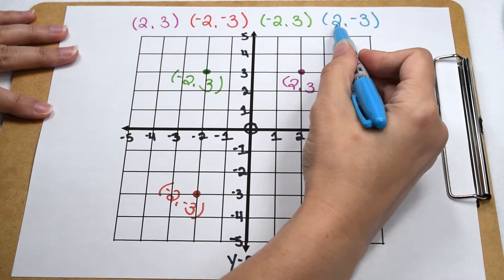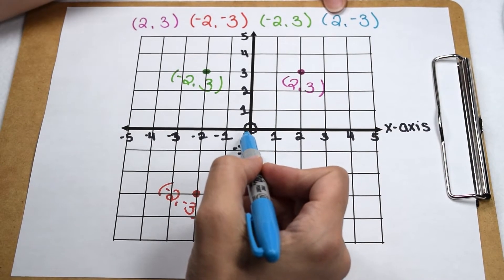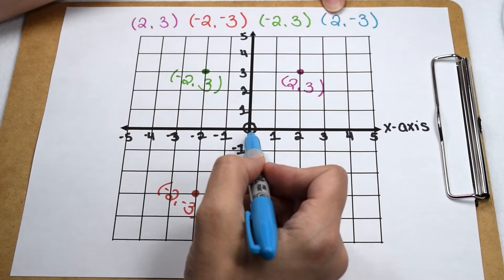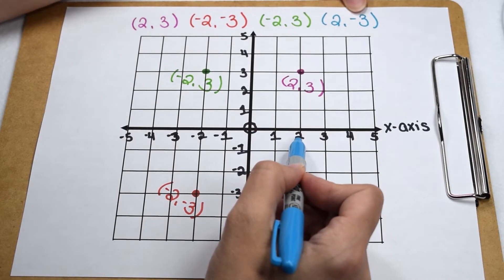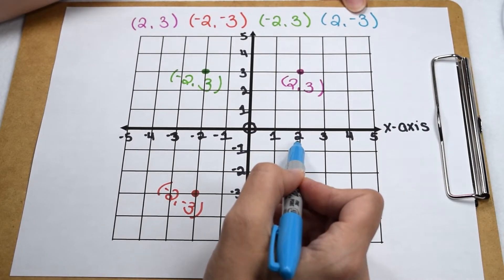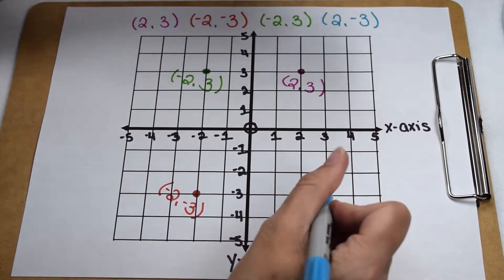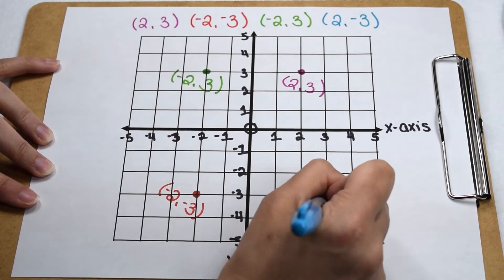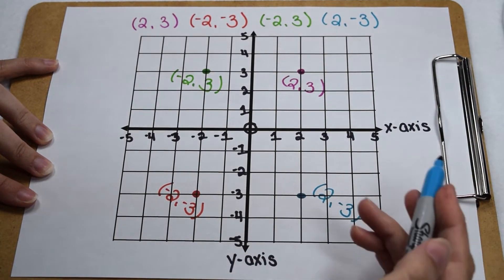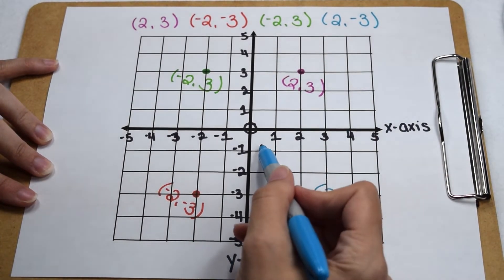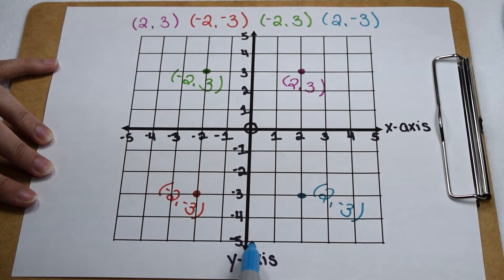To plot the point (2,-3), I'm going to start at the origin. No sign on the 2 means we can assume it's positive and go two places to the right. Negative 3 means I now need to go down three places for my y-coordinate. When I plot this point (2,-3), I see that I'm in quadrant 4. In quadrant 4, all x-values are positive and all y-values are negative.